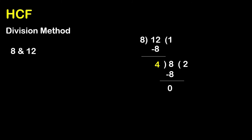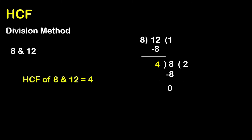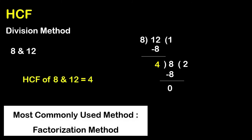Remainder is equal to 0. If you ask what the HCF is — when you divide and the remainder becomes 0, that divisor is the HCF. So remainder 0 means that step gives us HCF equals 4. The mostly commonly used method is the factorization method.